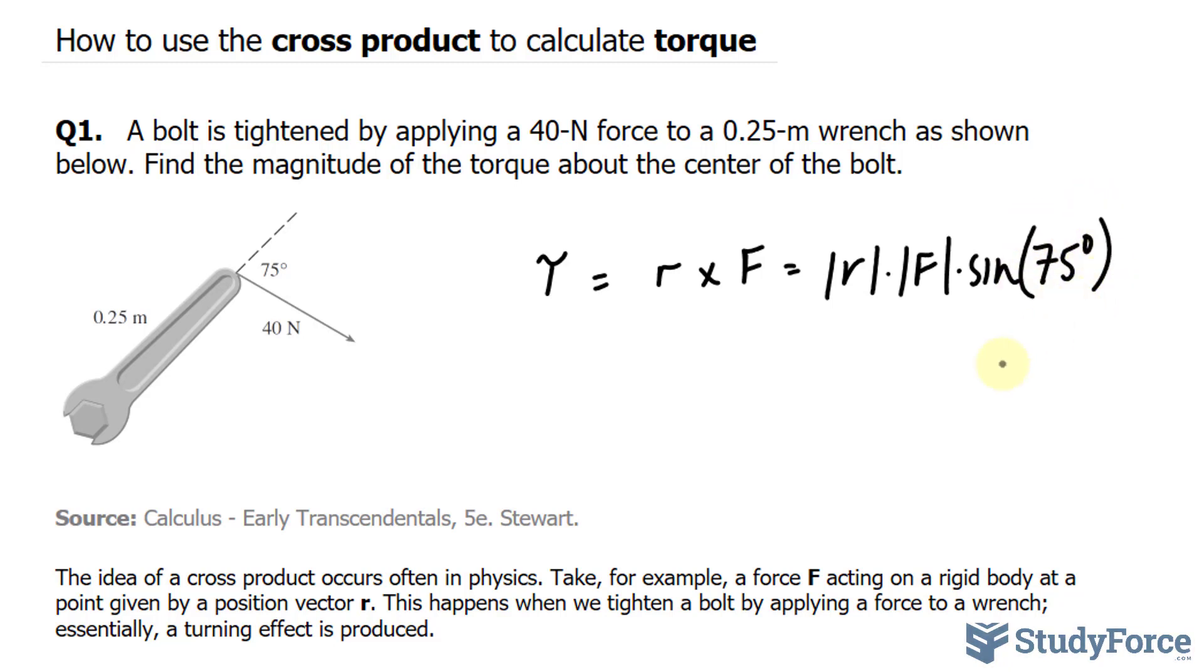We can replace R with 0.25, and we can replace F with 40 newtons. And whenever you're doing these types of examples, you want to make sure that the units here are in meters, because newtons is the same thing as 1 kilogram times meter over seconds squared. So you want to make sure that this is in meters and nothing else. And we multiply these two numbers by sine at 75 degrees.